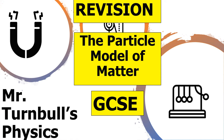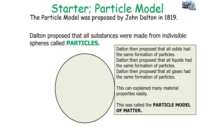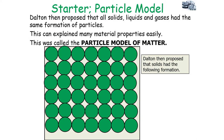Hello and welcome to today's revision session where we're going to look at the particle model of matter, which is a topic in GCSE separate science physics. The particle model was proposed by John Dalton in 1819, where he proposed that all substances were made from indivisible spheres called particles. Dalton then proposed that all solids had the same formation, all liquids had the same formation, and all gases had the same formation of particles, which he called the particle model of matter.